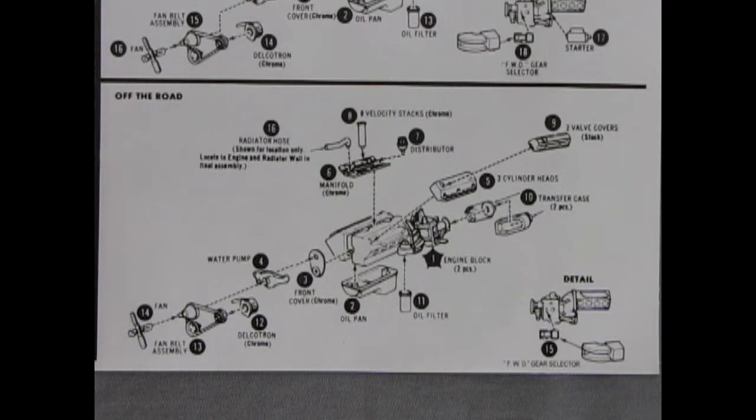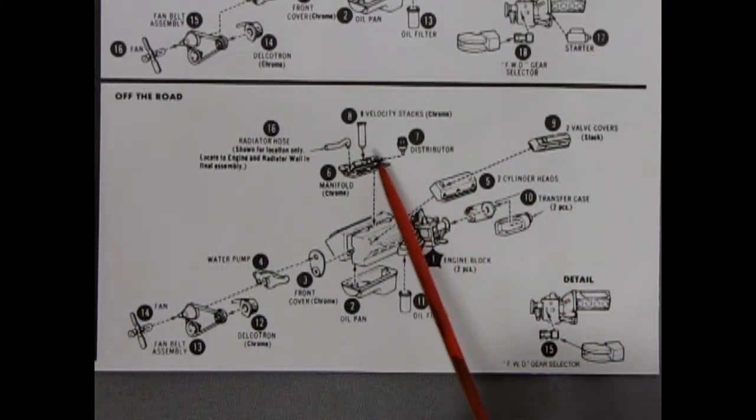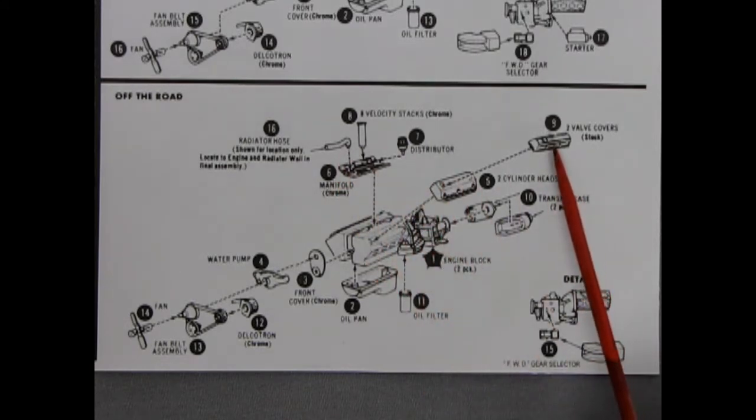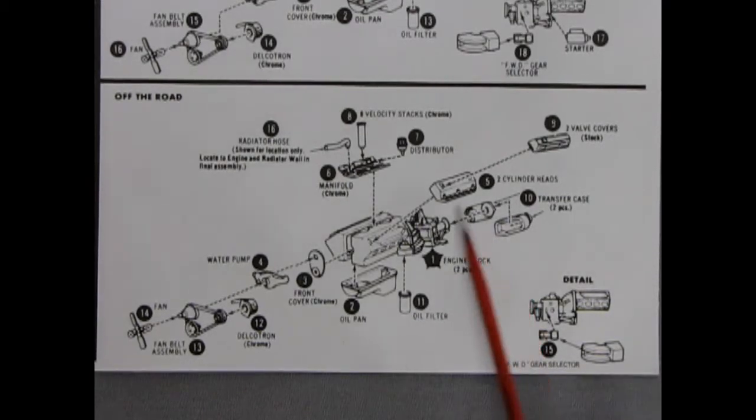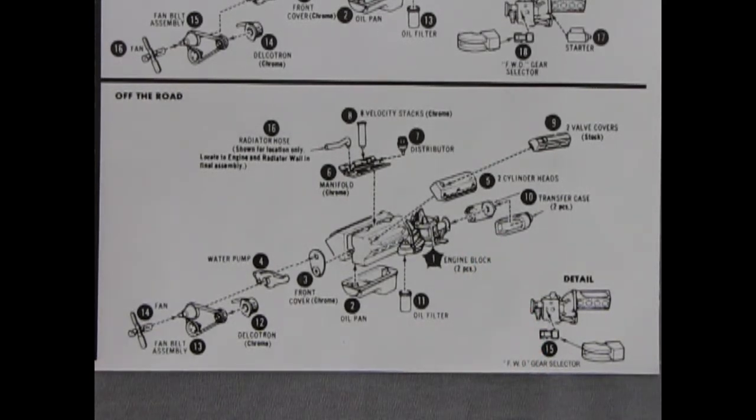Now if you want to give your blazer a little extra oomph into it, here we have this chrome intake manifold with eight velocity stacks that pop in. Then our upper radiator hose, distributor, valve covers, cylinder head, engine block left and right, oil filter, oil pan, front cover, water pump, the Delcrotron. Our pulleys, our fan, we have our gear selector glues on here. Interesting they don't show the starter on there like in the other thing above. And then we've got our transfer case and transfer case front cover.